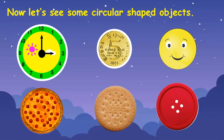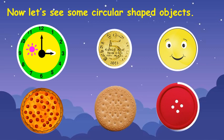Now look at the next one. What is this? It is the moon. And what is the shape of this moon? It is round in shape, so it is also like a circle. Now look at this red button. What is the shape of this button? It is a circular shaped button.